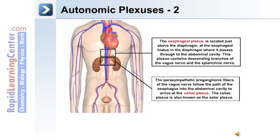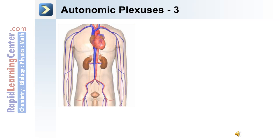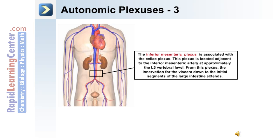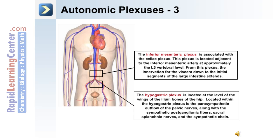The parasympathetic pre-ganglionic fibers of the vagus nerve follow the path of the esophagus into the abdominal cavity to arrive at the celiac plexus, also known as the solar plexus. The inferior mesenteric plexus is associated with the celiac plexus and is located adjacent to the inferior mesenteric artery at approximately the L3 vertebral level. From this plexus, innervation for the viscera extends down to the initial segments of the large intestine.